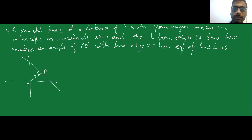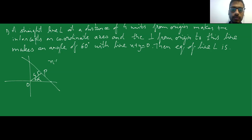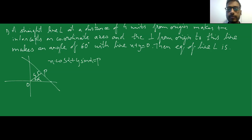Let us say this point is P, and the length of OP is four. Let the angle be alpha. The normal length is given as four and the angle is unknown. The equation of a line in normal form is x·cos(α) + y·sin(α) = P, where P is the perpendicular length, equal to four. So I need to find alpha first.